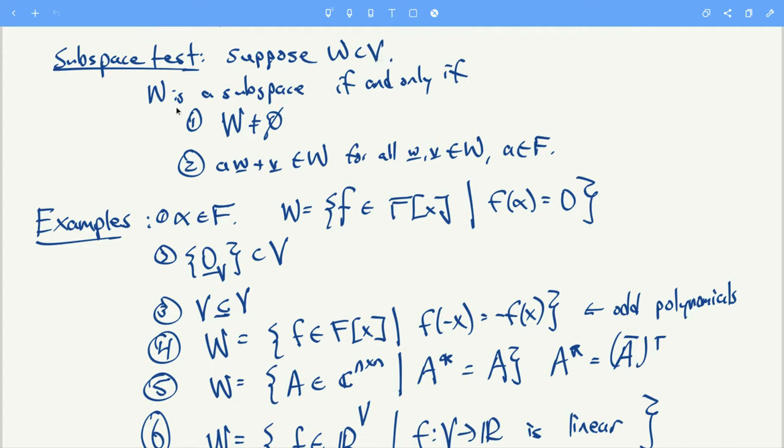Now quickly on to the subspace test which we kind of saw in Tuesday's class. If V is a vector space over F, then W is a subspace if and only if W is non-empty and a*w plus v is in W for all vectors w and v in W and all scalars a. And there's other ways to write this condition as we saw yesterday. I don't care which one you use. If you prefer the other one that we saw that's fine too. I just use this one out of habit.